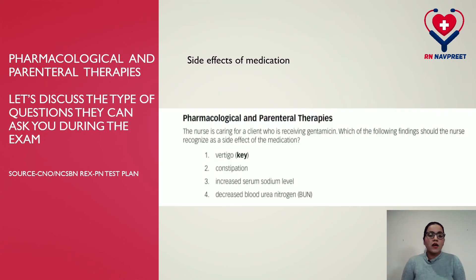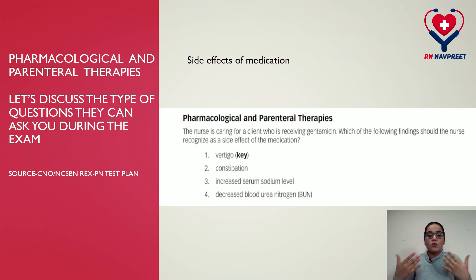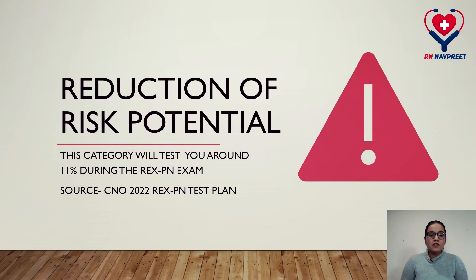This category also includes: initiating and maintaining continuous subcutaneous infusion, medication reconciliation process, titrating medication doses based on assessment and orders, handling medications in a safe and controlled environment, handling and administering high-alert medications and controlled substances, assessing peripheral venous access devices, monitoring and maintaining IV infusion sites, calculating and monitoring IV flow rate, maintaining pain control devices like patient-controlled analgesia, epidural and peripheral nerve catheters, and administration of parenteral nutrition. Sample item: The nurse is caring for a client receiving gentamicin. The correct side effect is option one: vertigo.